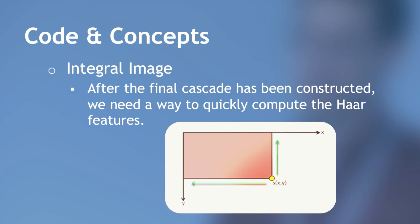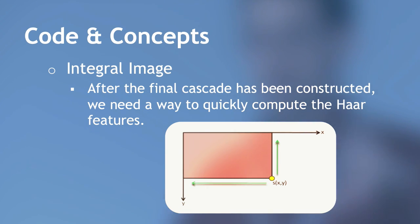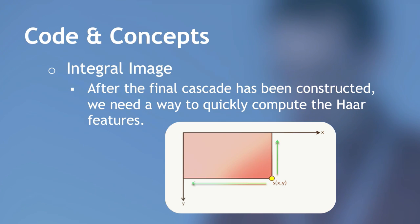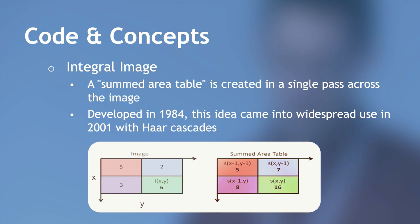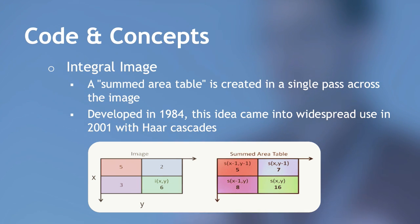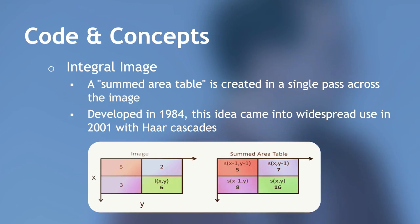There's another problem that Viola and Jones solved very cleverly with the idea of an integral image — also known as a summed area table. They needed to compute differences in those rectangular areas really quickly. The naive way is to write nested for loops summing all the pixels in each area, but that doesn't work well when you have to go through 200 classifiers. The integral image is created in a single pass — it pre-computes cumulative sums so that the area of any region within an image can be computed with just simple addition and subtraction. For example, if you have pixel values 5, 2, 3, and 6, the summed area table becomes 5, 7, 8, and 16.